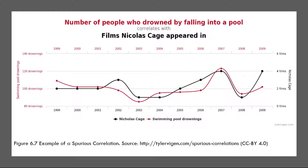The first is called the directionality problem. Two variables, X and Y, can be statistically related because X causes Y or because Y causes X. Consider a study showing that whether or not people exercise is statistically related to how happy they are, such that people who exercise are happier on average. This is consistent with the idea that exercising causes happiness, but also with the idea that happiness causes exercise — perhaps being happy gives people more energy or leads them to seek opportunities to socialize by going to the gym.